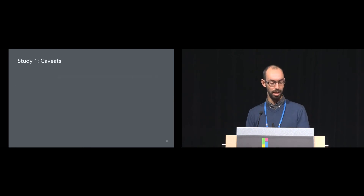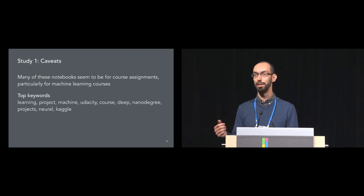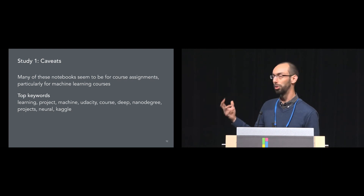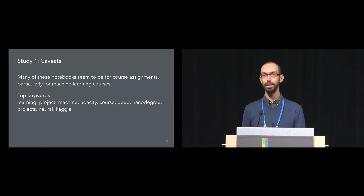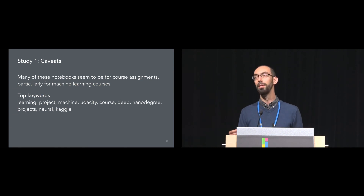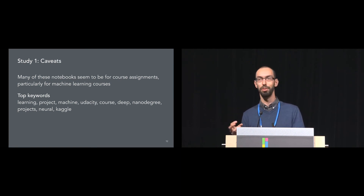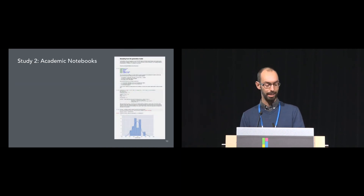A caveat: many of the notebooks on GitHub seem to be for course assignments, particularly students learning machine learning. As we looked at keywords in the repository descriptions, some of the top words were "learning machine," "Udacity," "nanodegree." It may be that students in these courses aren't getting much training on using the notebook as a narrative vehicle and are just focusing on the methods. It may also be that these students aren't really focused on sharing their work with others or expecting others to replicate it. So maybe we were looking at the wrong set of notebooks.